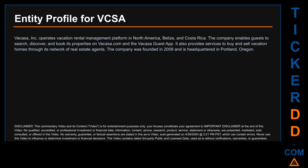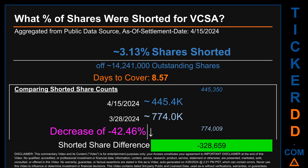The company behind this ticker: Vicasa Inc operates a vacation rental management platform in North America, Belize, and Costa Rica. The company enables guests to search, discover, and book its properties on Vicasa.com and the Vicasa guest app. It also provides services to buy and sell vacation homes through its network of real estate agents. The company was founded in 2009 and is headquartered in Portland, Oregon.